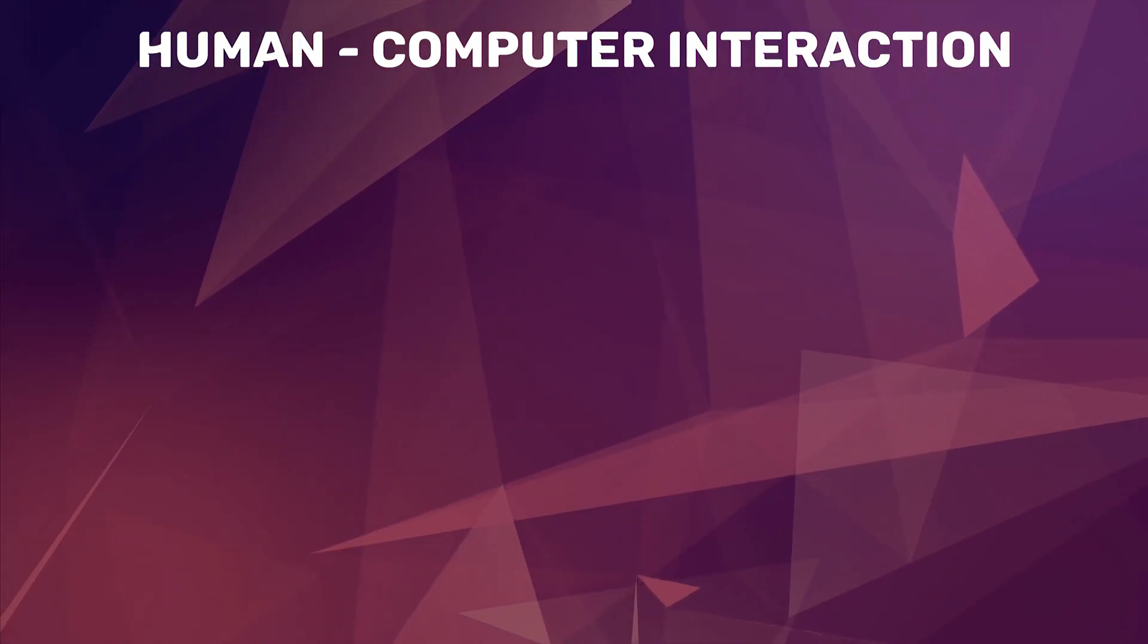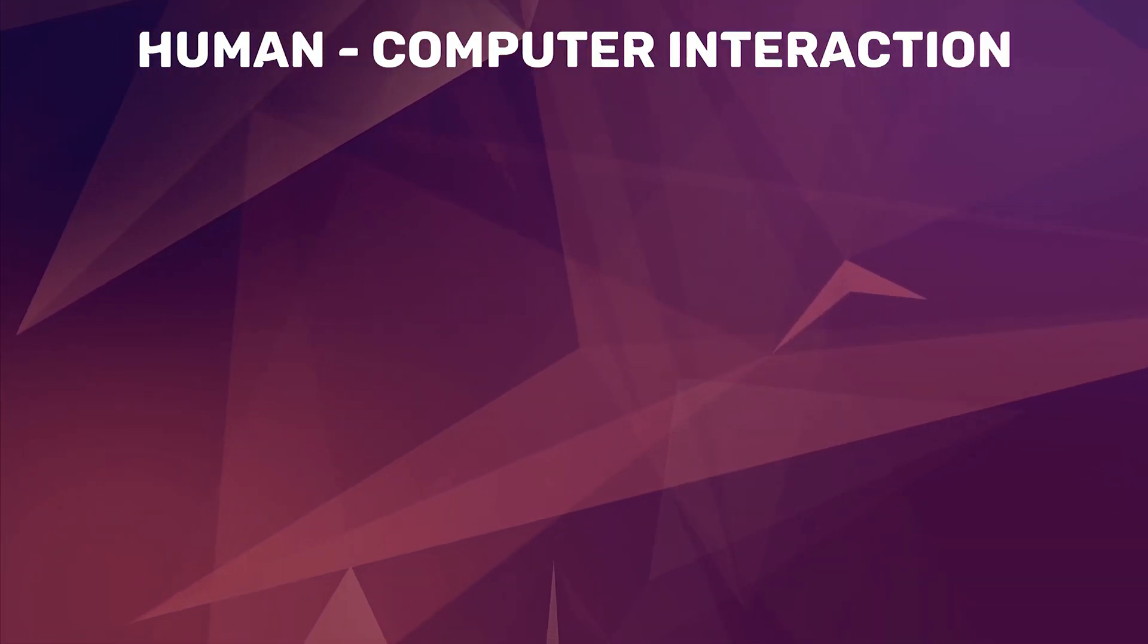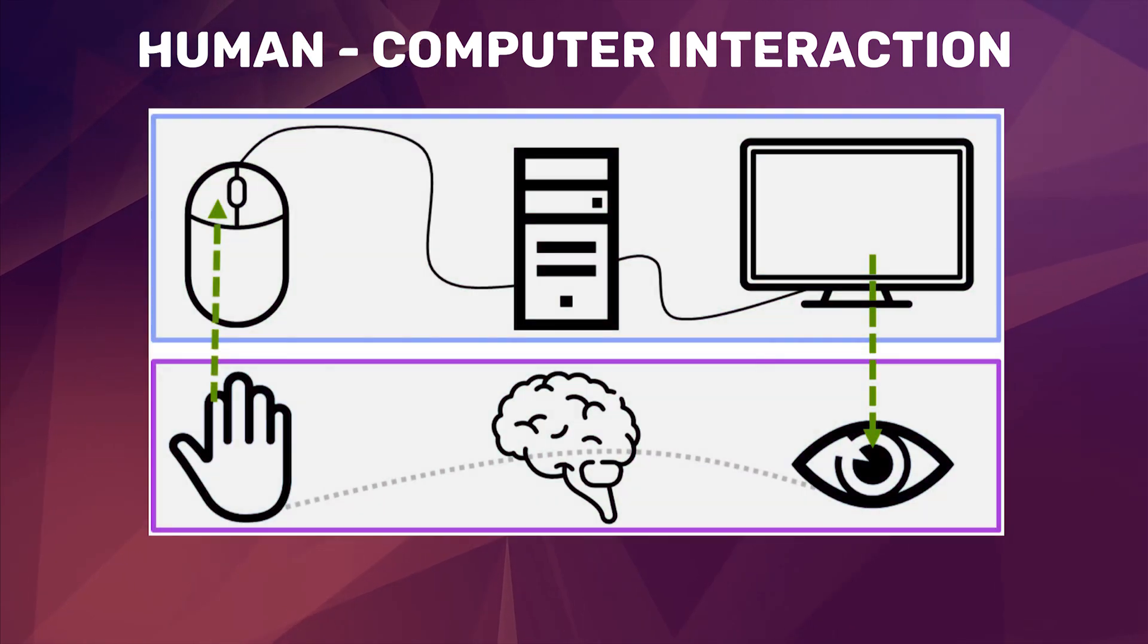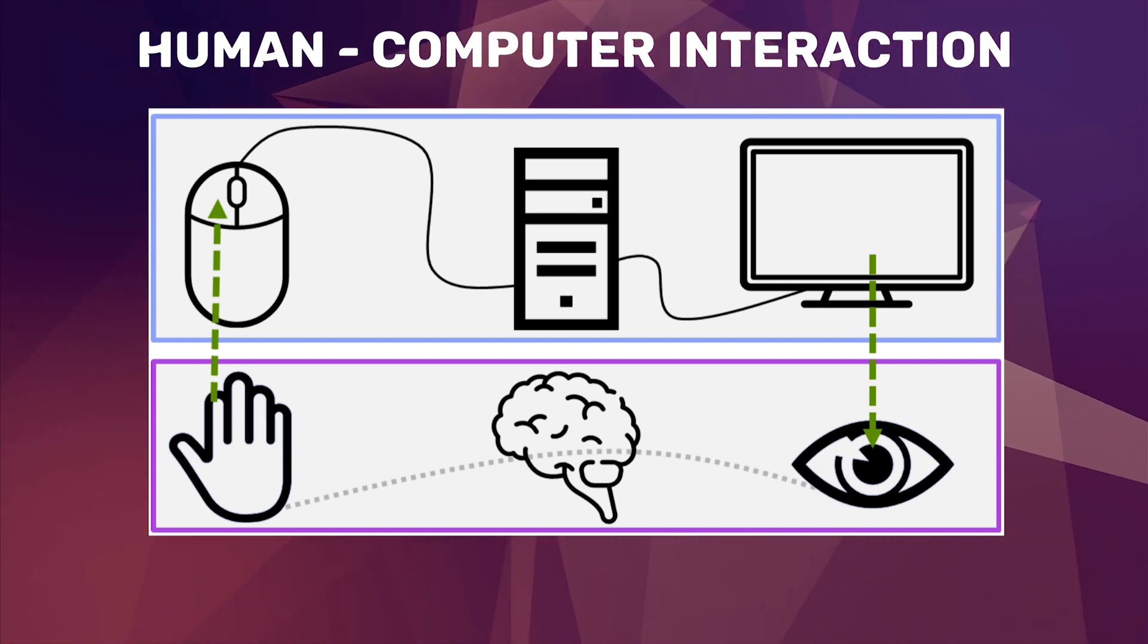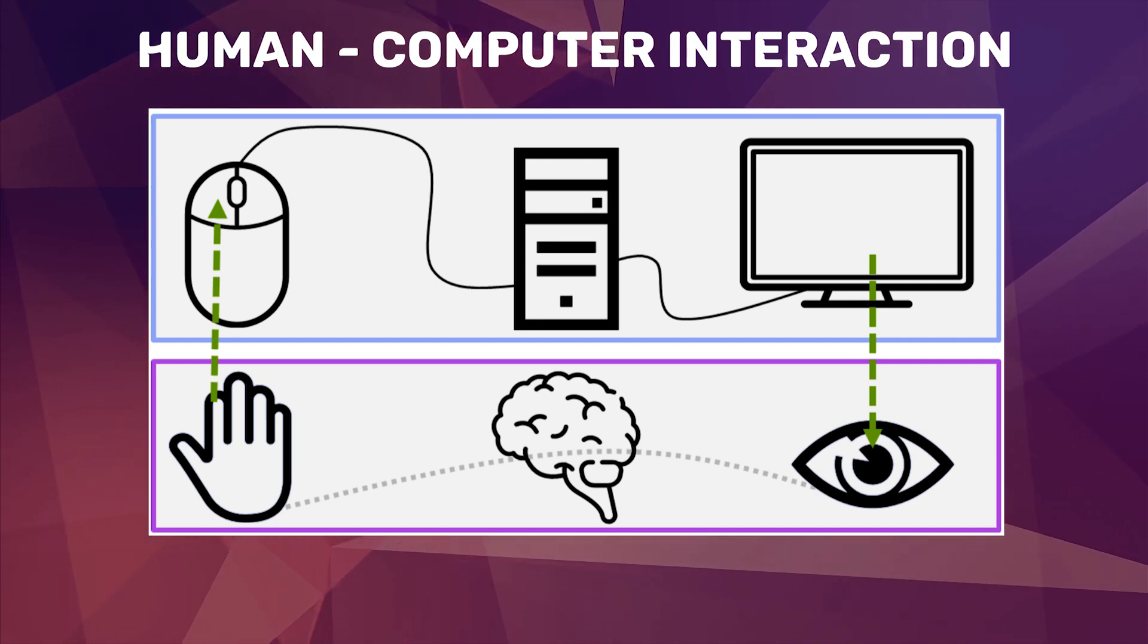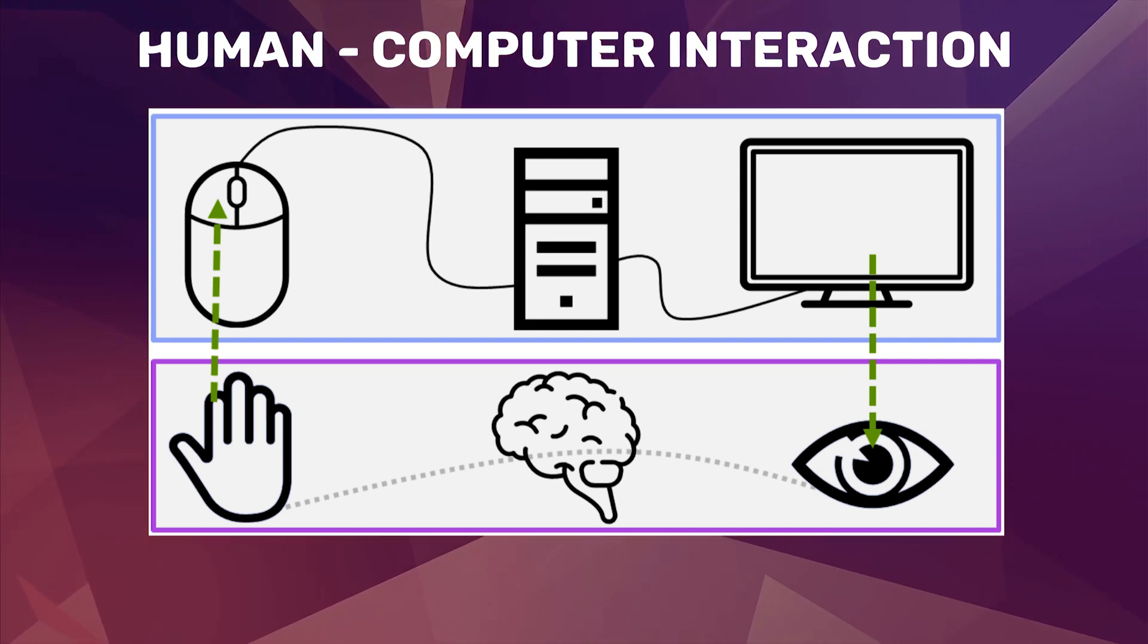When looking at the heart of understanding esports players' mechanical performance, you find this model that explains the human-computer interaction. The model shows that the signal has to transfer from the computer through the screen to your eyes to be processed in the brain before activating the hand movement.